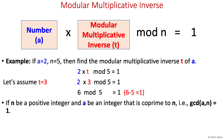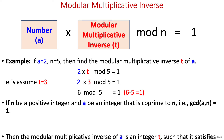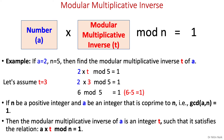So how do we define it formally? If n is a positive integer and a is an integer that is co-prime to n, then the modular multiplicative inverse of a is an integer t which satisfies the relation a times t mod n equals 1.